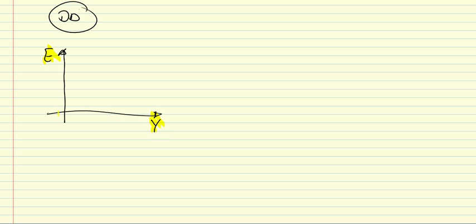So we have the exchange rate on this axis and output on this axis. What you're going to see is that the curve that we're going to derive looks like this. It's upward sloping.